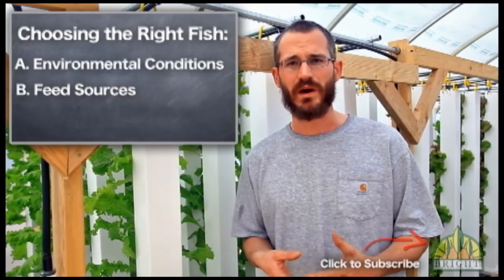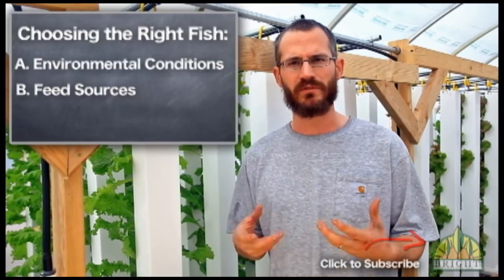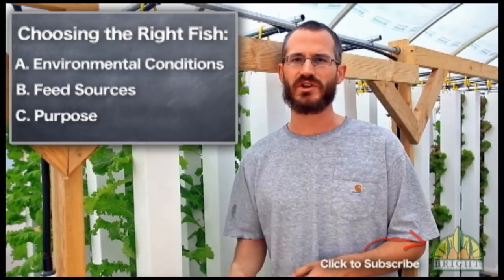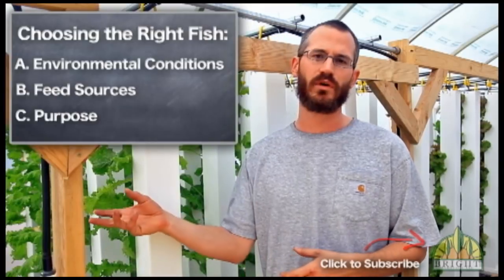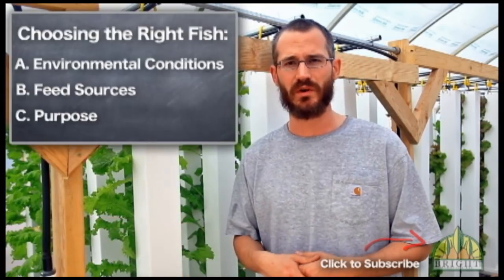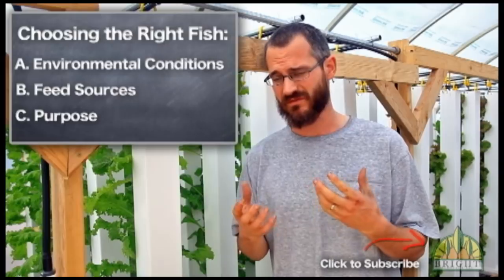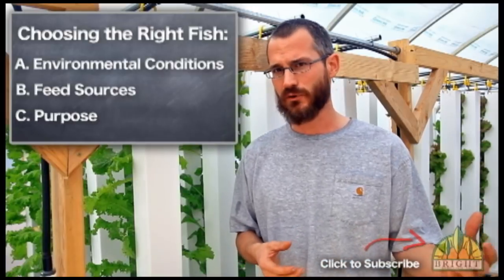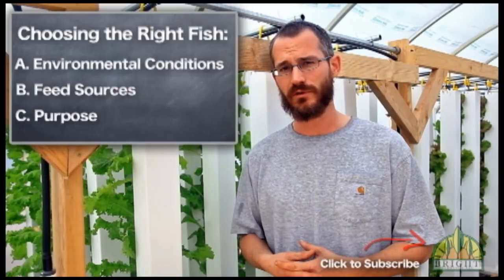The last consideration is finding a fish that's appropriate for your purpose. If you're not interested in eating your fish and prefer ornamental fish, then something like koi or goldfish would be a great choice. They're very tolerant of poor water quality, they'll eat just about anything, and they're very easy to take care of. If you're interested in a food fish, then of course you want to consider a food fish.